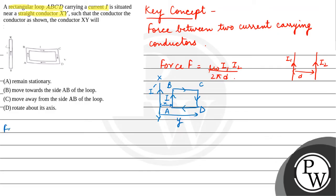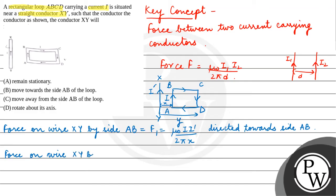So firstly, force on wire XY by side AB will be equal to, let's say F1, that is equal to mu naught I I dash upon 2 pi X, and it is directed towards side AB.